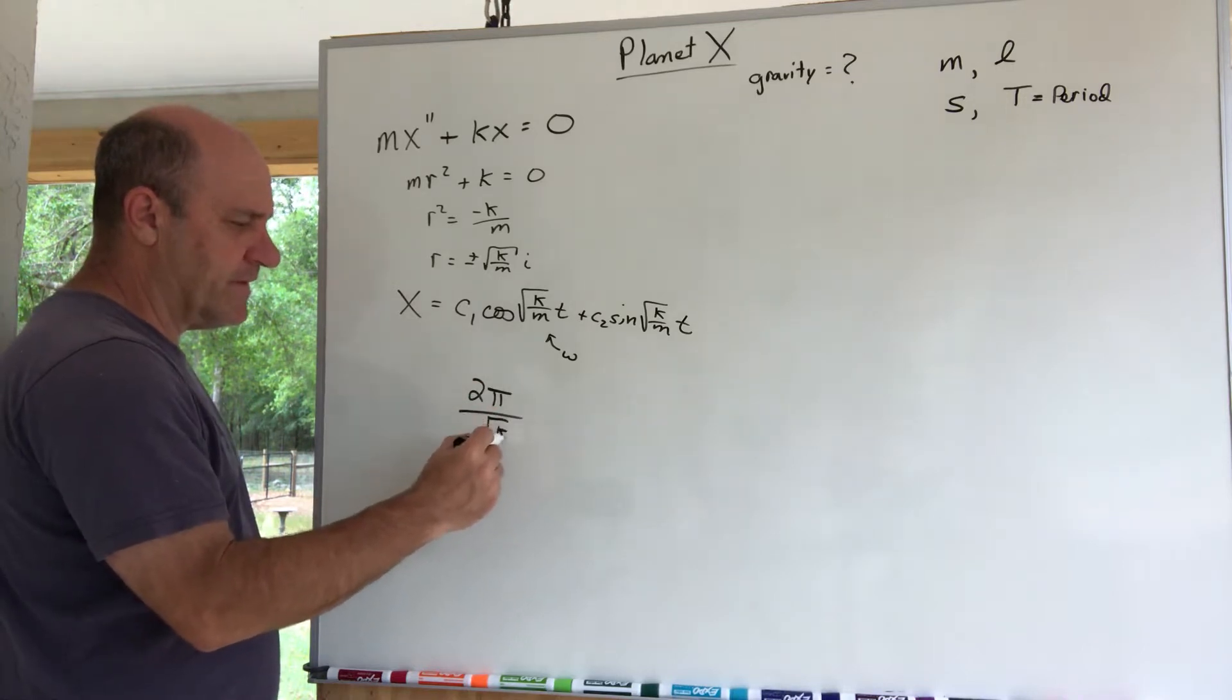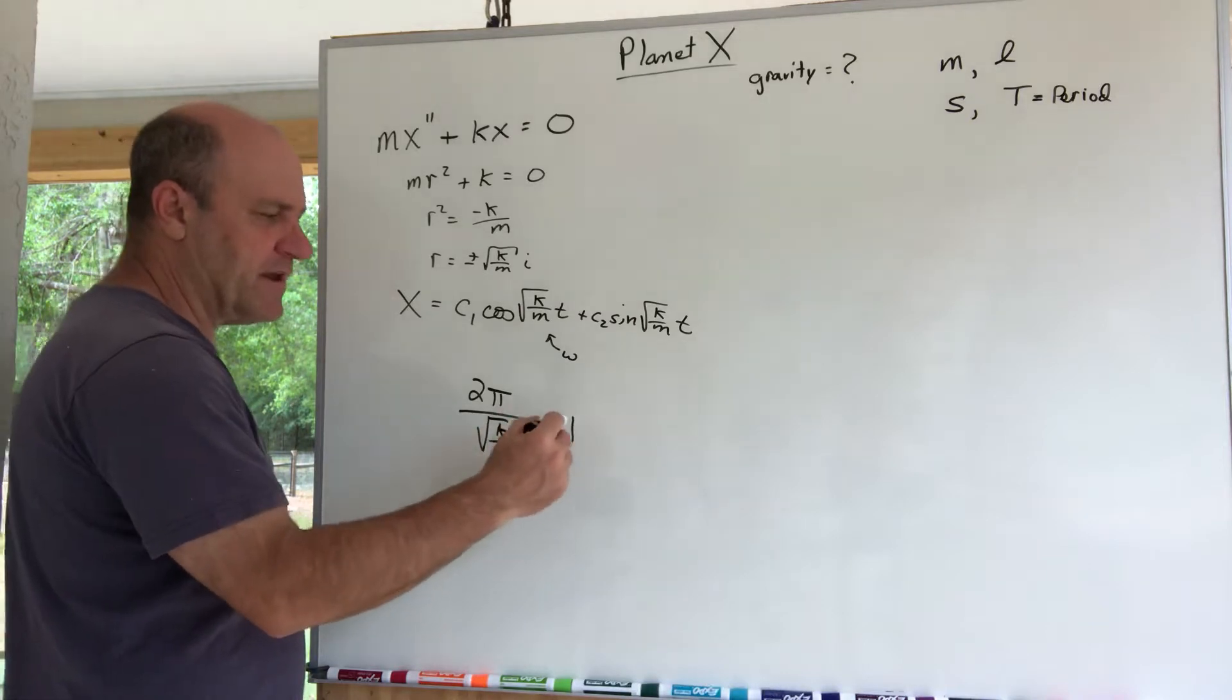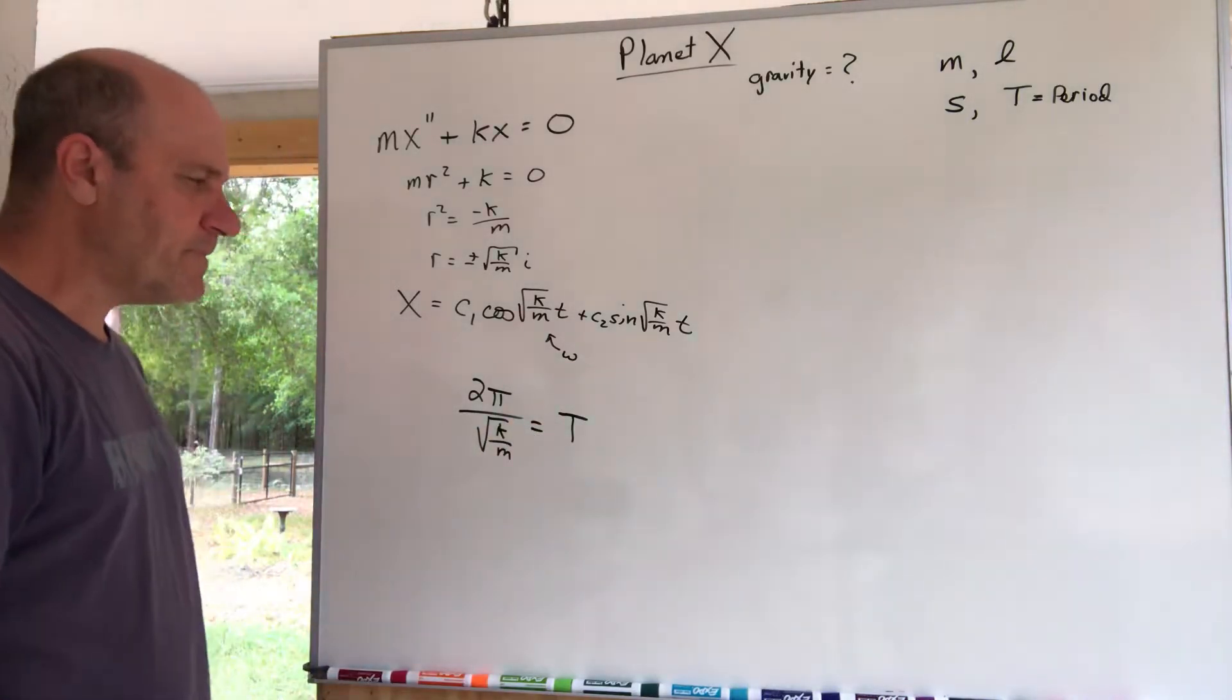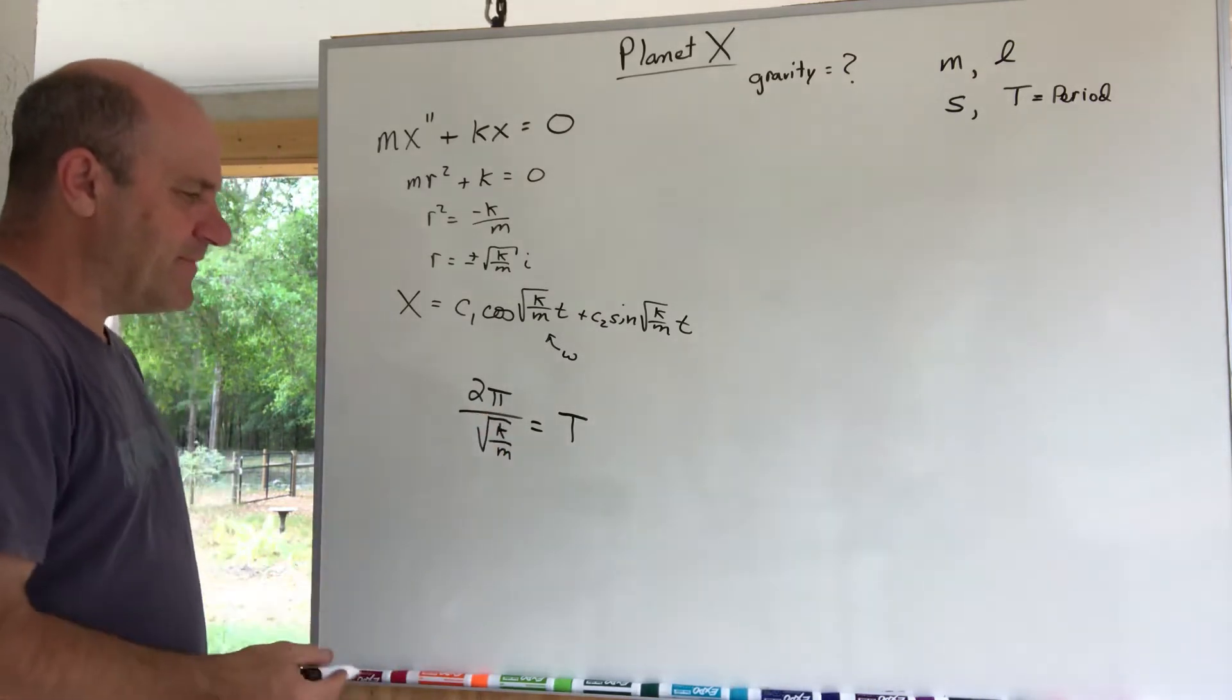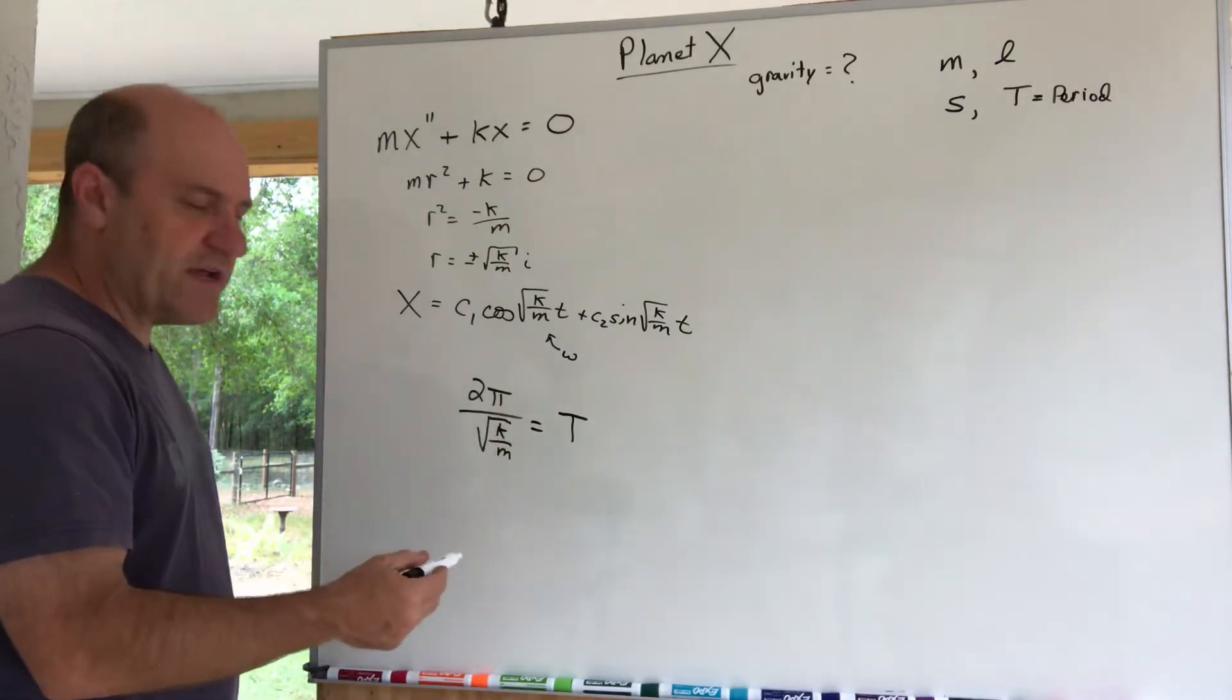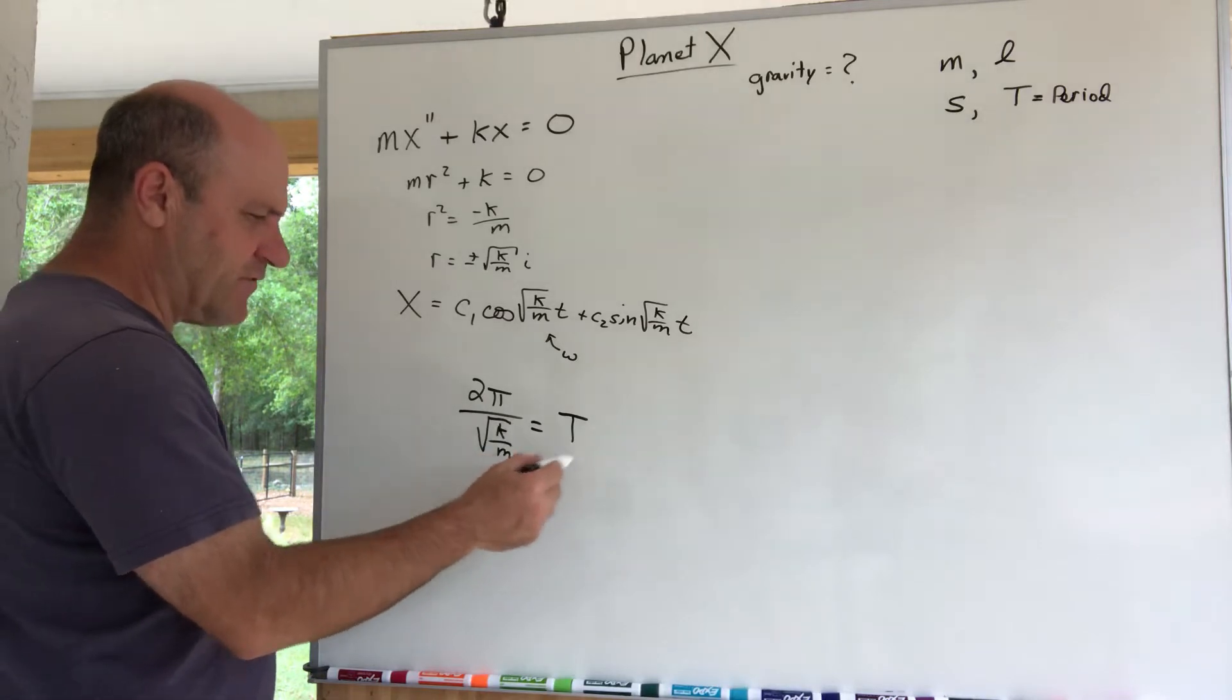So I'm gonna just, I'm gonna say 2π over this number √(K/m) is the period. I'm gonna call the period capital T. Anyway, I'm just gonna play around with this equation, that's what physics students tend to do.